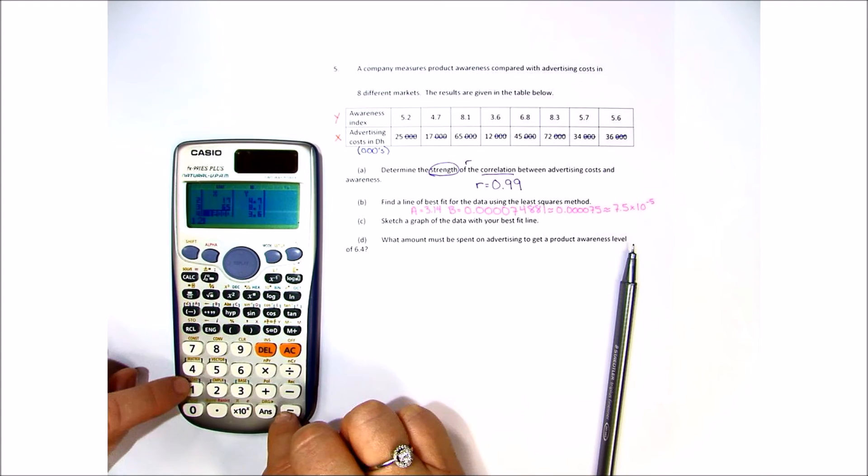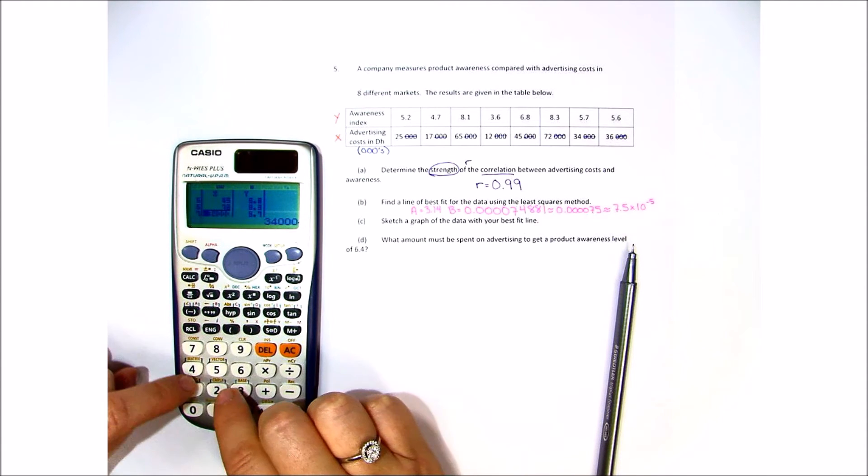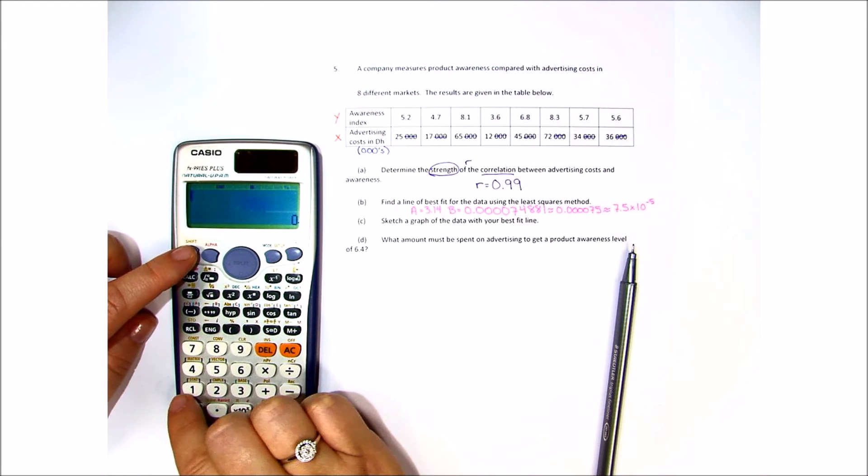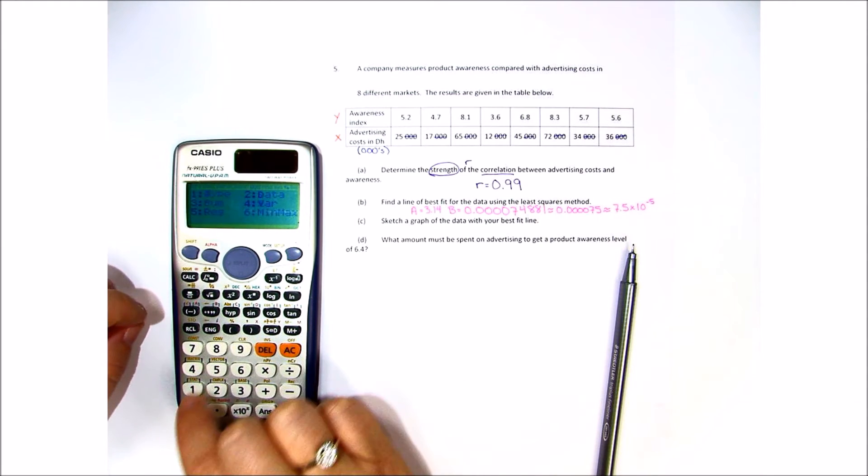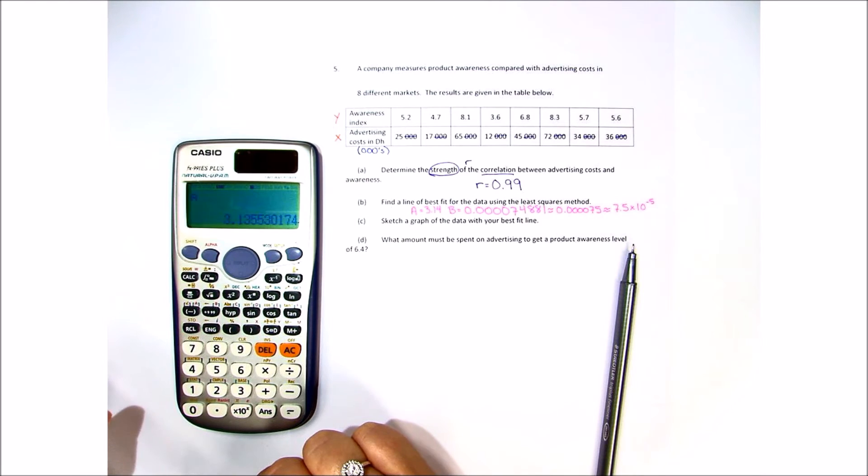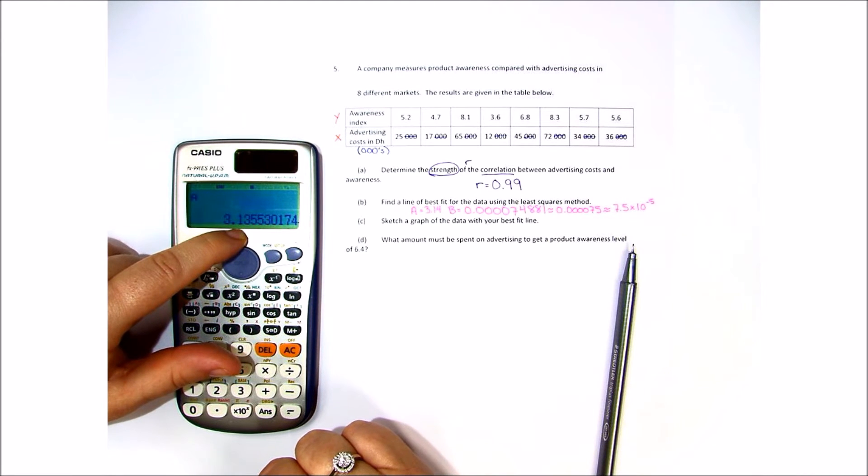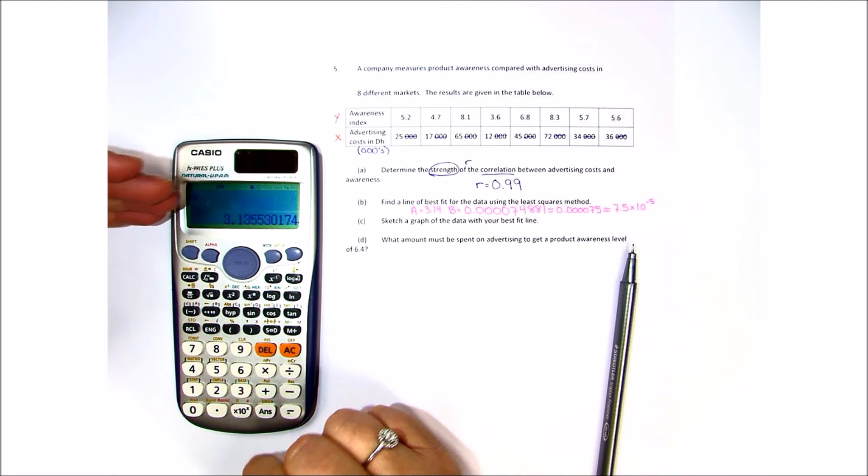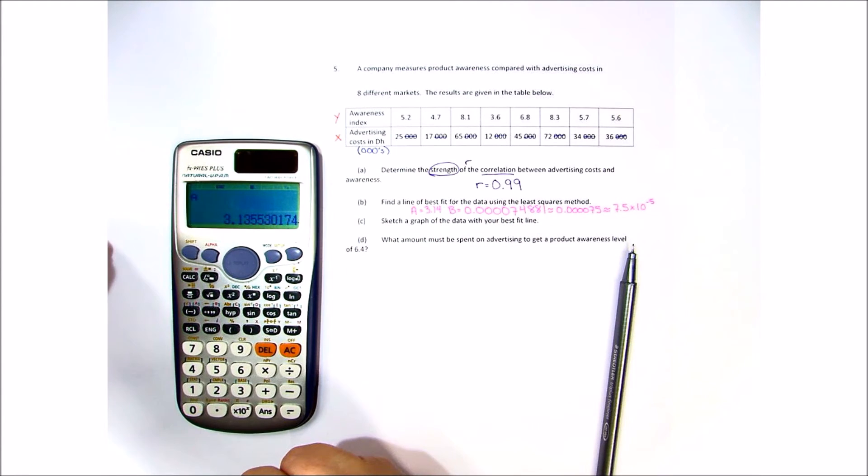Now go back to our home screen, shift 1, 5, and let's see if a changes. A doesn't change, it's still 3.14. The intercept won't adjust. The only thing that will adjust is our b.